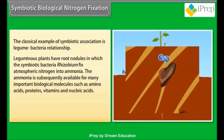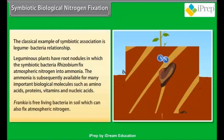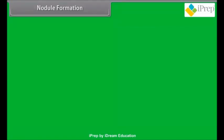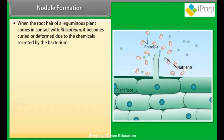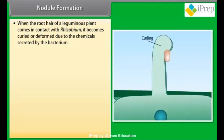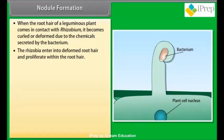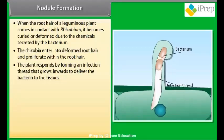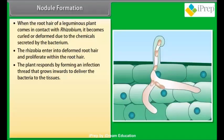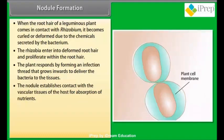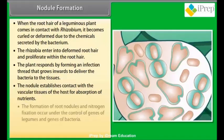The ammonia produced is subsequently available for many important biological molecules such as amino acids, proteins, vitamins, and nucleic acids. Frankia is a free-living bacteria in soil which can also fix atmospheric nitrogen. Nodule formation: when the root hair of a leguminous plant comes in contact with Rhizobium, it becomes curled or deformed due to chemicals secreted by the bacteria. The rhizobia enter the deformed root hair and proliferate within it. The plant responds by forming an infection thread that grows inwards to deliver the bacteria to the tissues. The nodule then establishes contact with the vascular tissues of the host for absorption of nutrients. The formation of root nodules and nitrogen fixation occurs under the control of genes of both the legume and the bacteria.